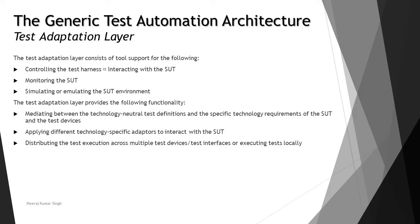Generally, the adaptation layer involves creating stubs and drivers required to assist execution, creating web services or APIs as a layer between the application and the database, and simulating or emulating a platform to serve both app interaction and the user of the application. The test adaptation layer provides the functionality of mediating between technology-neutral test definitions and the specific technology requirements of the SUT and test devices.